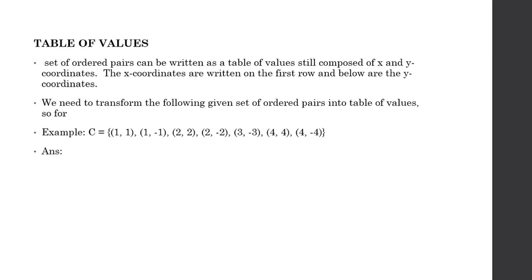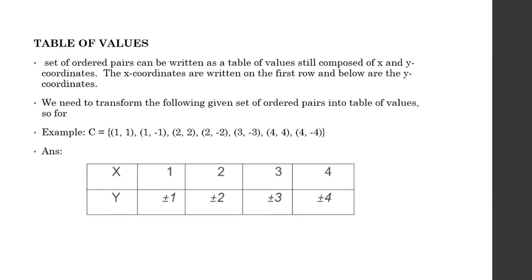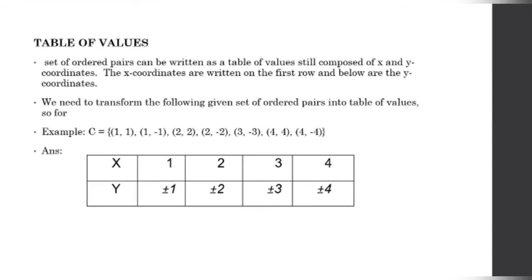There is another way to express functions and relations: through the table of values. It's just a set of ordered pairs written in a table of values, still composed of x and y-coordinates. The x-coordinates are written on the first row and below are the y-coordinates. We need to transform the following given set of ordered pairs into the table of values.